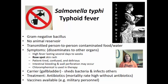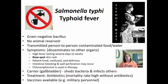Salmonella typhi causes typhoid fever. It is a gram-negative bacillus with no animal reservoir; it is transmitted person-to-person through contaminated food and water. Symptoms include high fever lasting several days to weeks, rose spot skin rashes, confusion, and delirium. It can cause intestinal bleeding and wall perforation, with holes in the intestinal wall. Chloramphenicol is used in therapy. This organism disseminates into other organs and can be carried in the gallbladder, shedding bacteria and infecting others without the carrier being symptomatic.